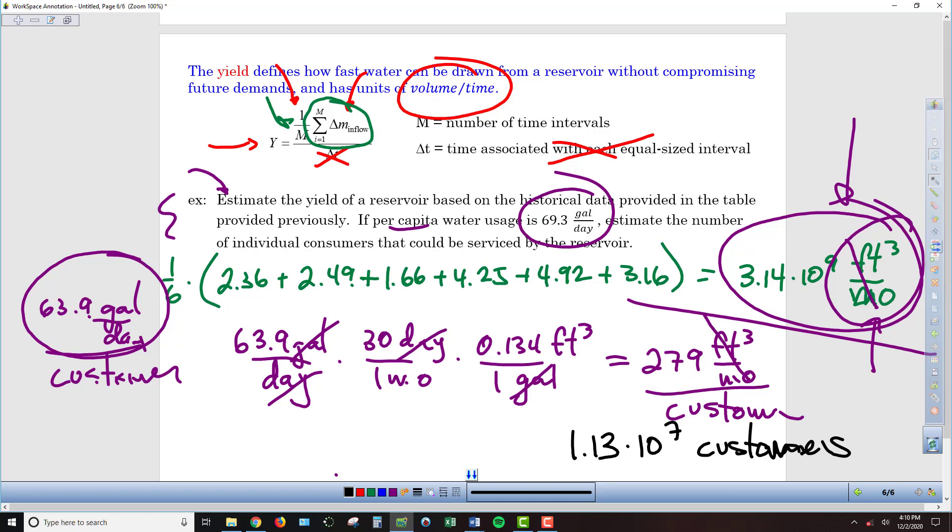So again, yield, we calculated that, but then it was a matter of trying to figure out how we're going to use that number to figure out the number of people that can be supported. So we needed to convert our gallons per day estimate per person into like units of cubic feet per month, so that when we divide those two quantities, we end up figuring out how many total people can be supported by this reservoir.